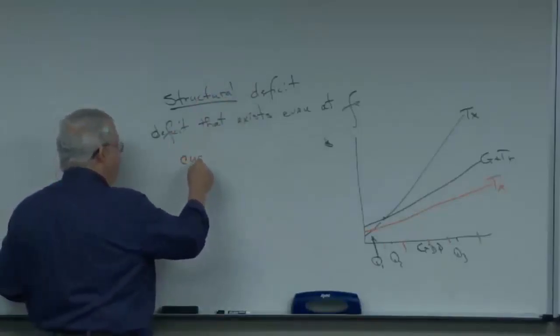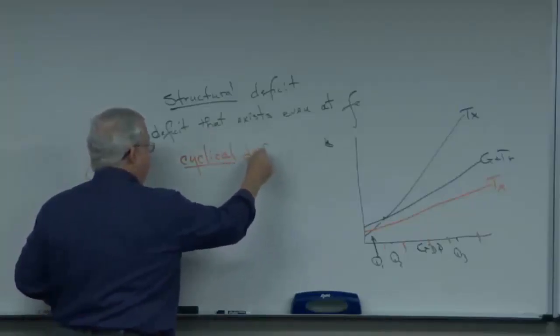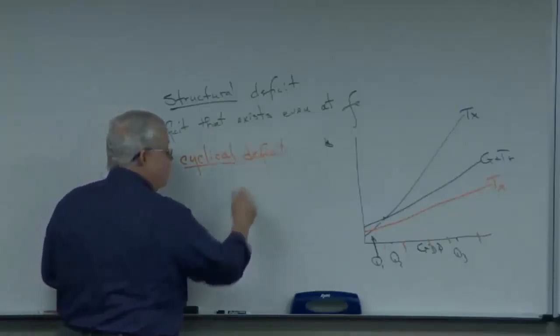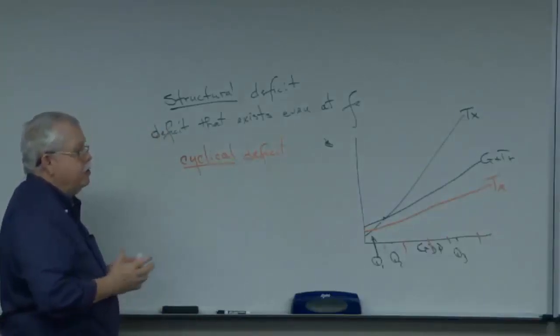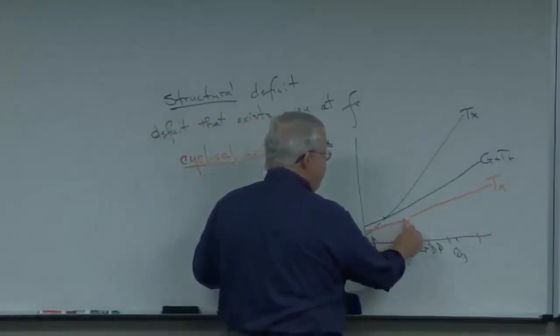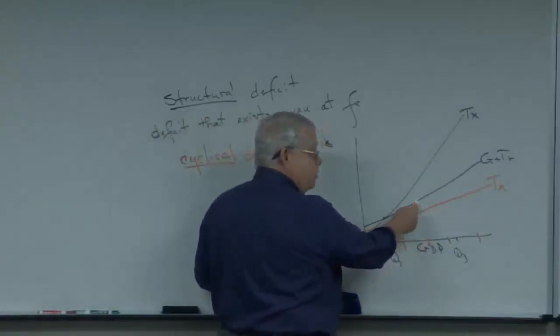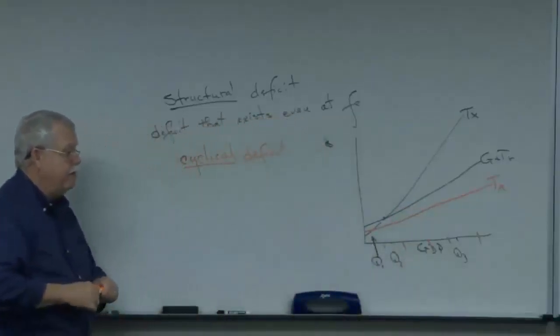Contrast that with the book's term, and it's absolutely correct, a cyclical deficit. Sorry, but when the tax line never goes above the spending line? Then you have a surplus. No, what would you say? That orange thing? When the tax line never goes above the expenditures line, you have a perpetual or structural deficit.